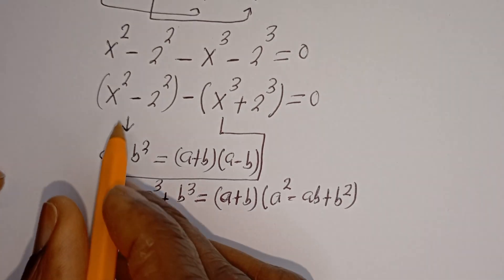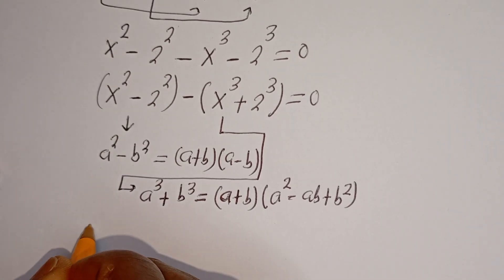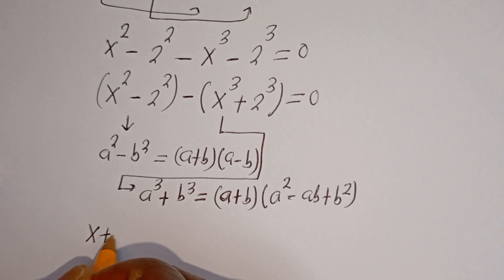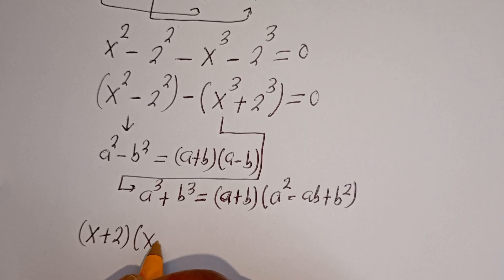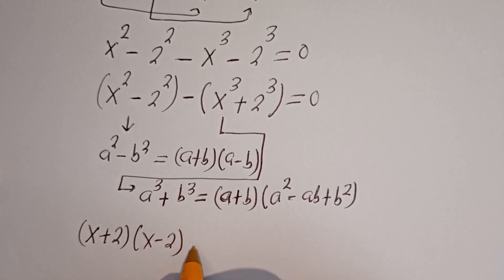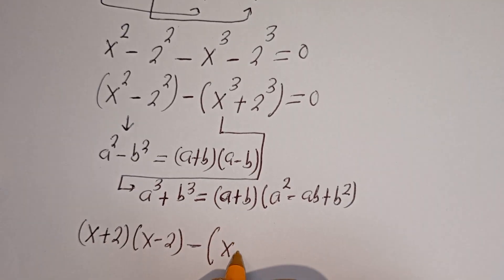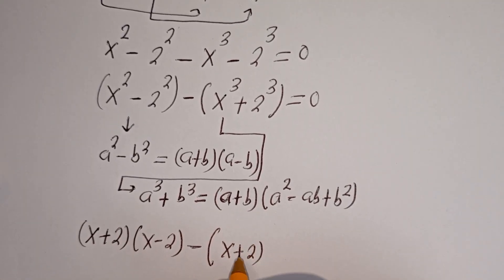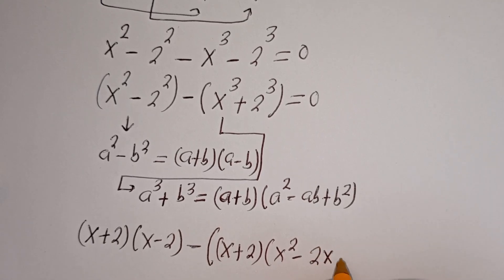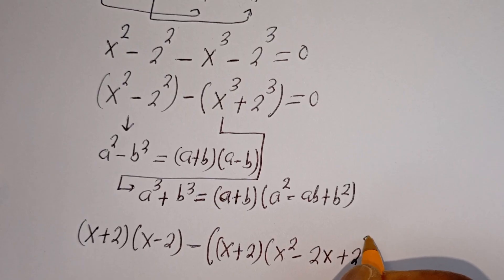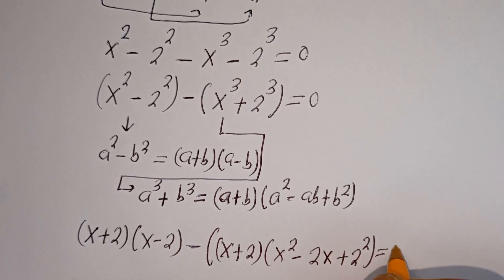This can be written as: we have (S plus 2)(S minus 2), then minus (S plus 2) bracket, S plus 2 squared, is equal to 0.